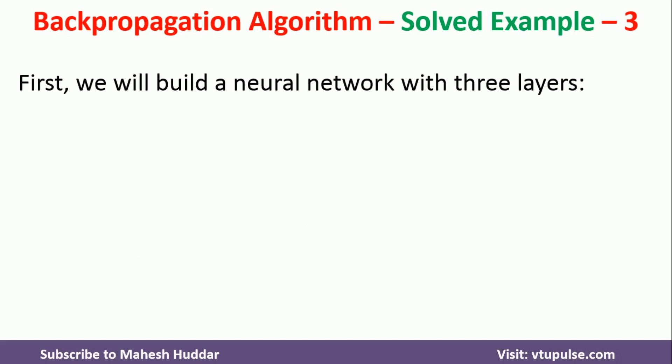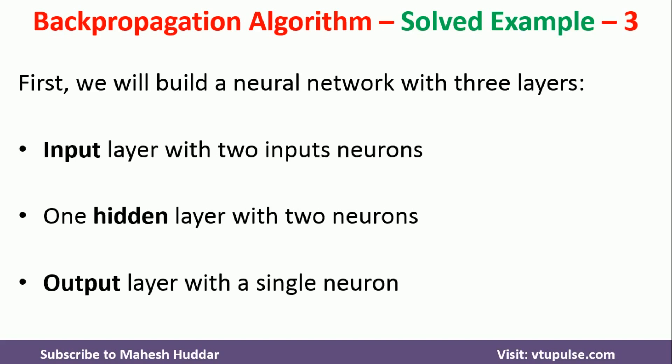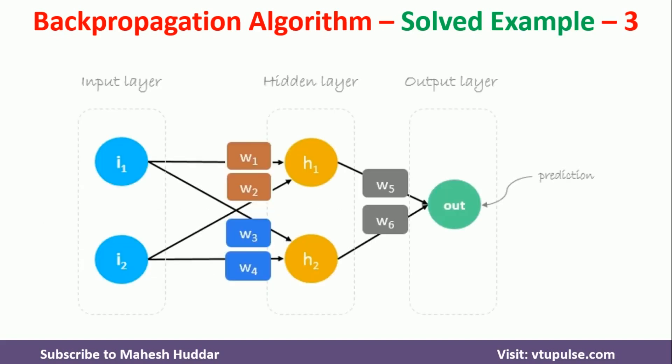There are mainly three components in a neural network: one is the input layer, second one is the hidden layer, and the third one is the output layer. In this case, I am going to consider an input layer with two input neurons, an output layer with one neuron, and a hidden layer with two neurons. Here, I1 and I2 are the input layer neurons, H1 and H2 are the hidden layer neurons, and Out is the output layer neuron.